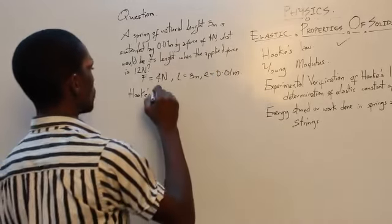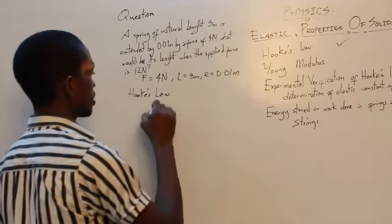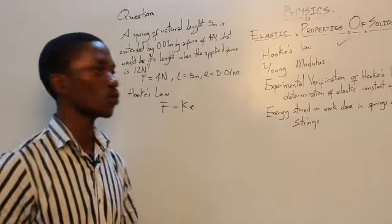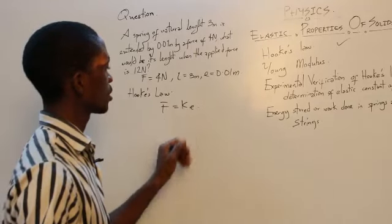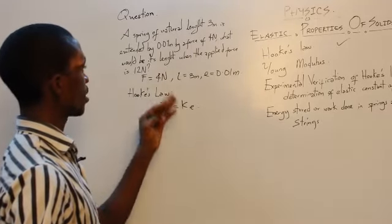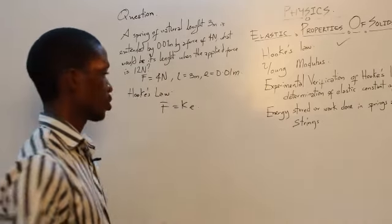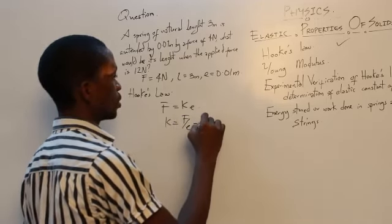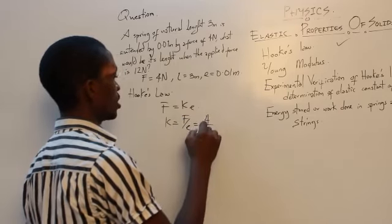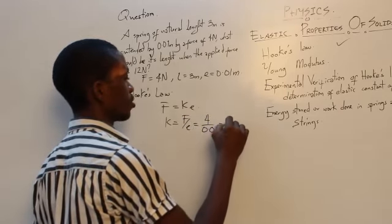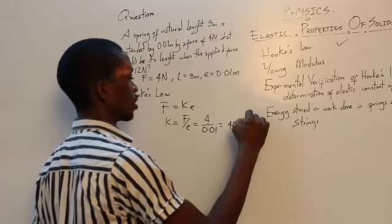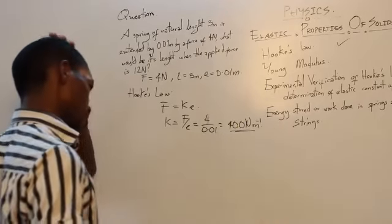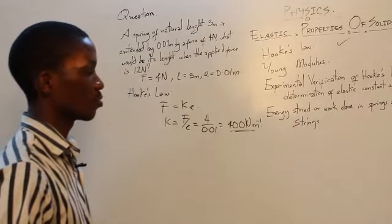Considering Hooke's Law: F equals KE, where K is our spring constant. We need to calculate the spring constant. K equals F over E, which is 4 divided by 0.01, giving us 400 newtons per metre.